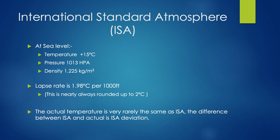The ISA also assumes a lapse rate, so for every thousand feet we go up in altitude the temperature drops around 2 degrees — exactly 1.98, but we round up to 2 degrees. Very rarely is the temperature actually ISA. If conditions differ from what the International Standard Atmosphere assumes, it will be known as an ISA deviation.